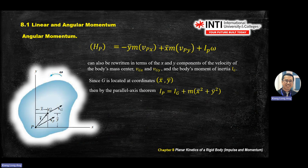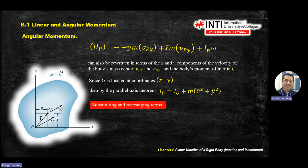To find moment of linear momentum H about point P, use I_P = I_G + md², where d is the distance from the reference point P to the center of mass G. You can memorize either the long Cartesian form or this compact form — both give the same result. As long as you remember the structure H = I·ω with parallel axis theorem, you're fine.